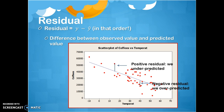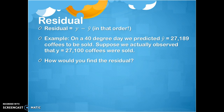So how do we actually calculate the residual for a given data point at a given temperature? Let's say our predicted line gives us, on a 40-degree day — we plug in 40 degrees for the explanatory variable of temperature — a predicted average coffee sales of 27,189.